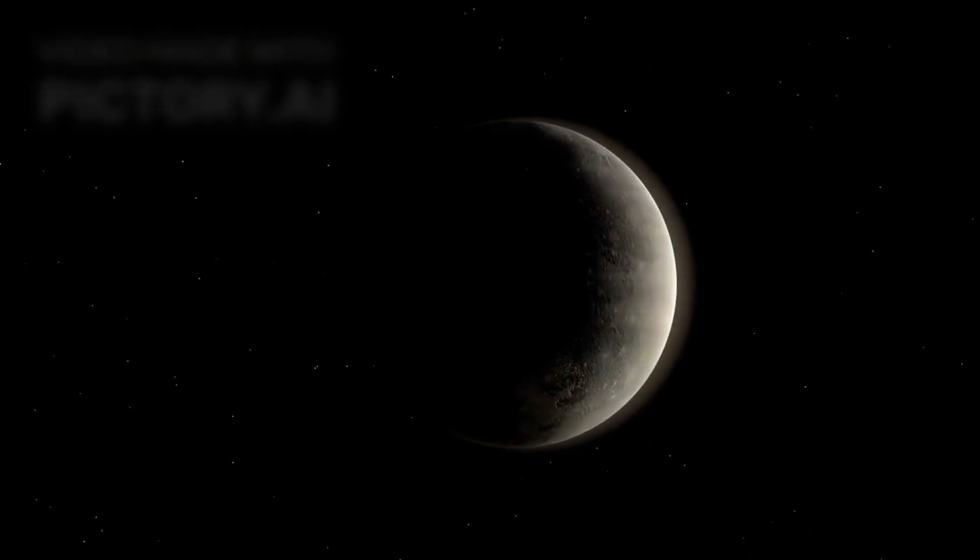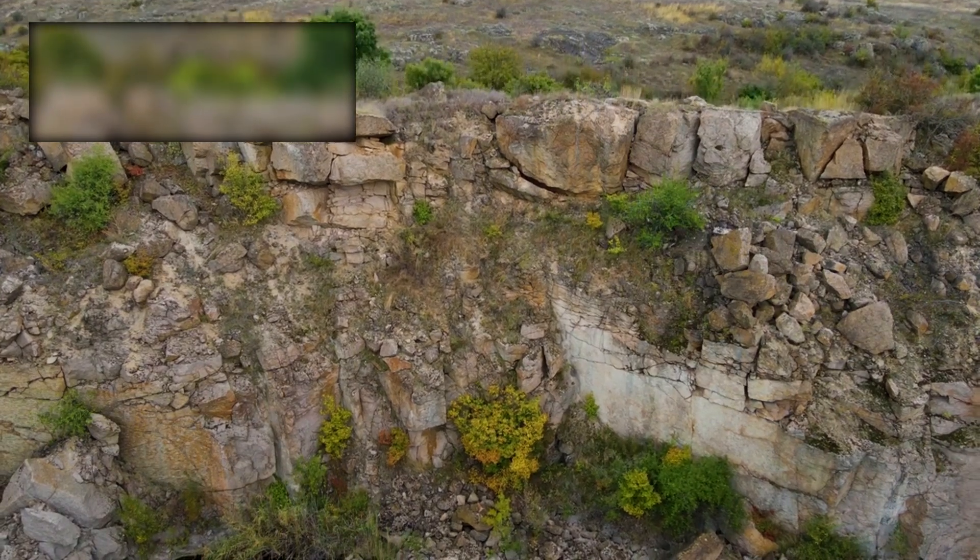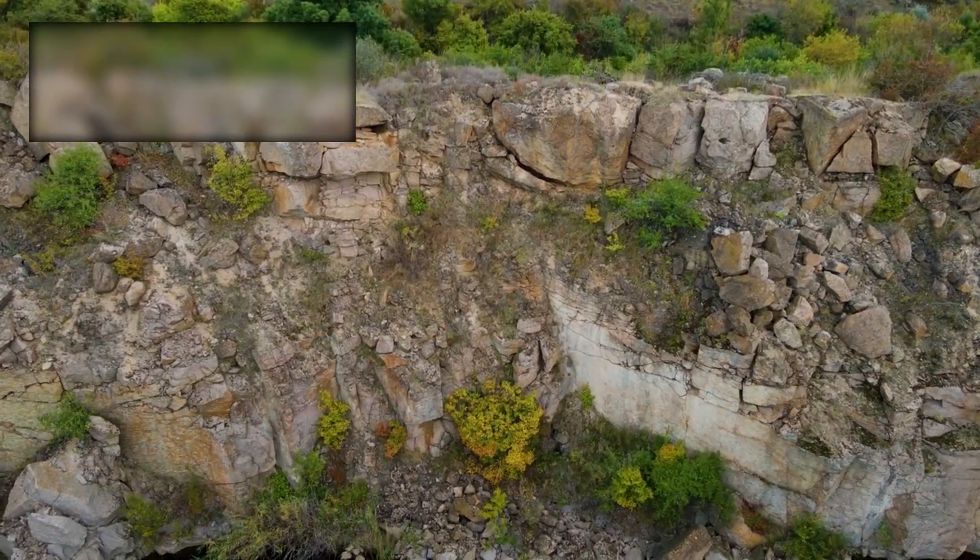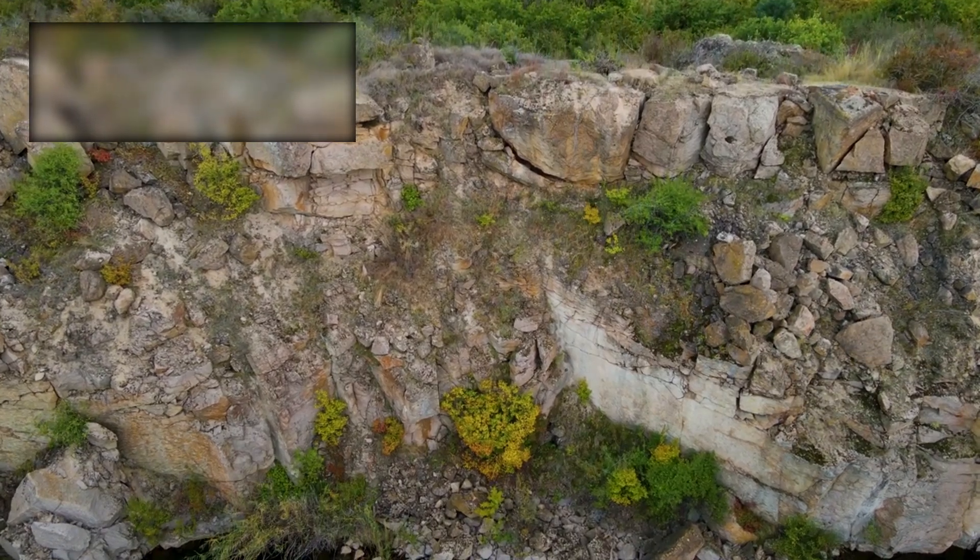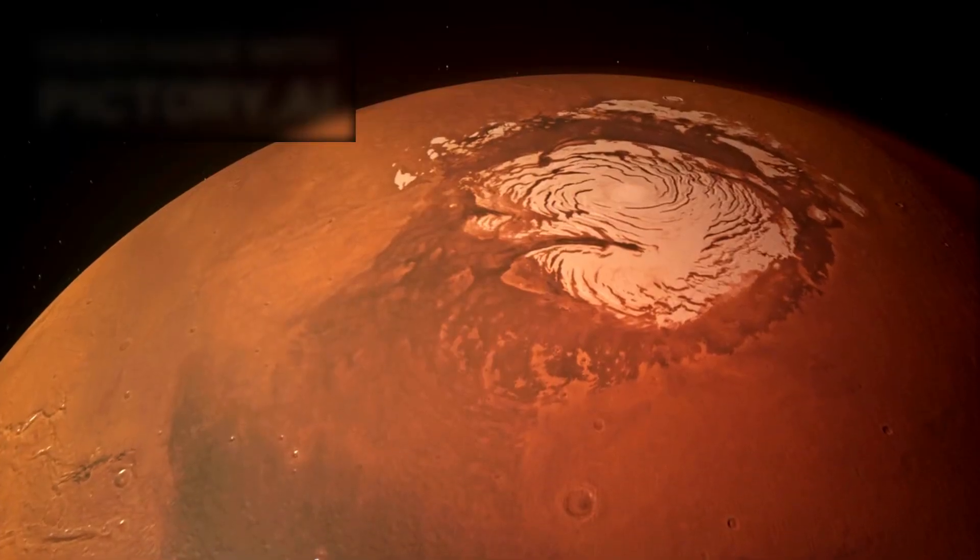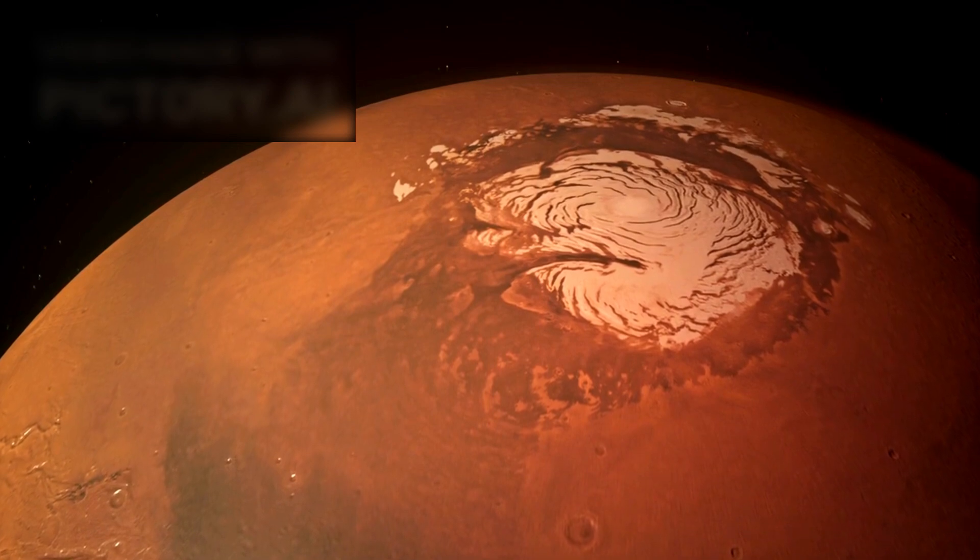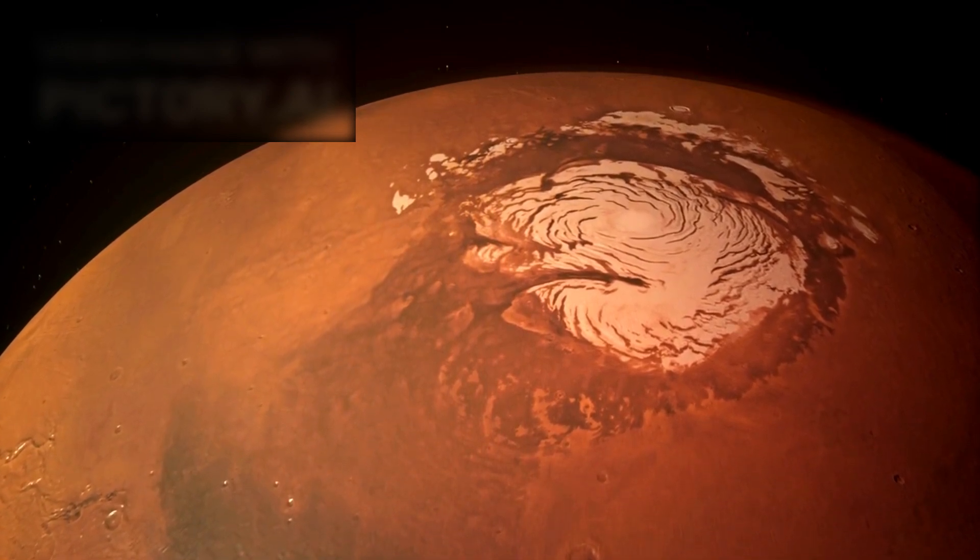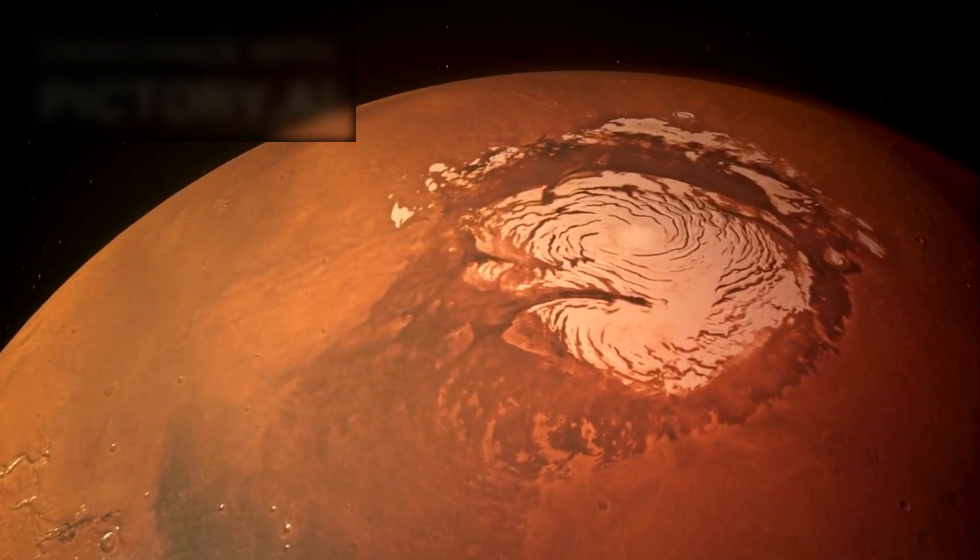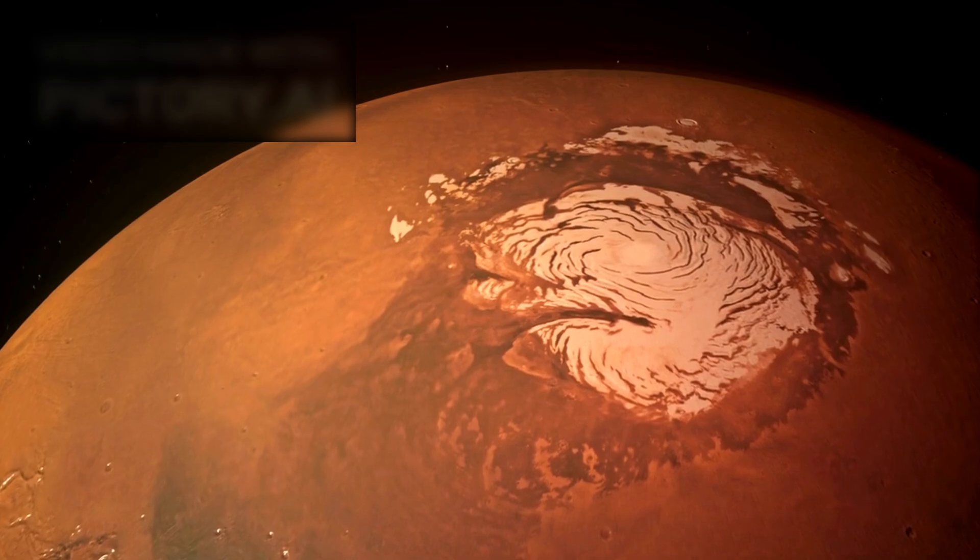Pluto's relationship with Charon deepens the mystery. Charon's surface shows signs of tectonic activity from its own past, deep chasms, grooves, and ridges. At its poles, strange red caps have been observed, possibly formed as gases escape from Pluto, drift across space, and freeze upon landing on Charon's surface.